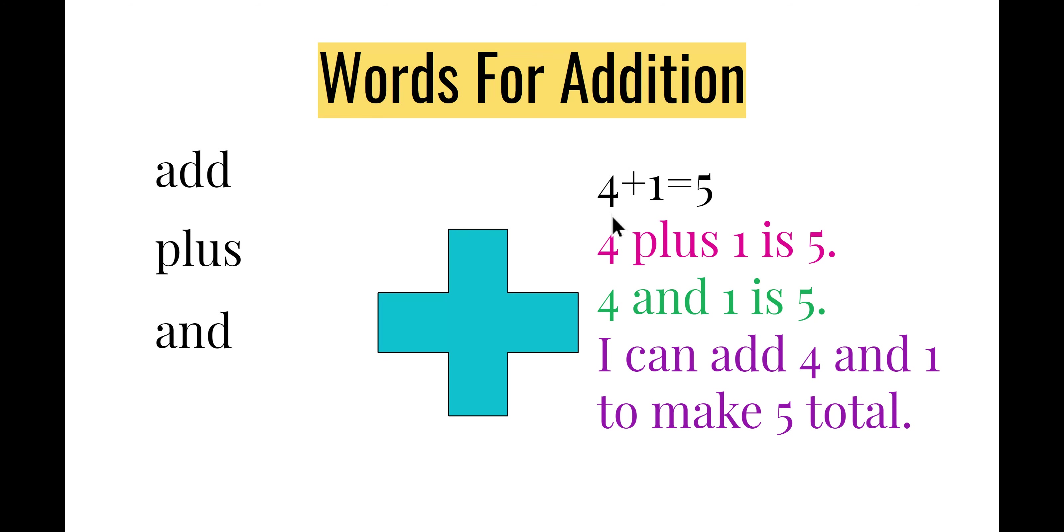Let's read those in a sentence. 4 plus 1 equals 5. 4 plus 1 is 5. 4 and 1 is 5. I can add 4 and 1 to make 5 total.